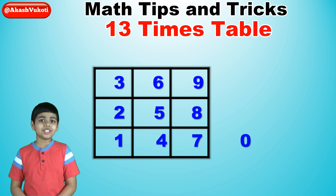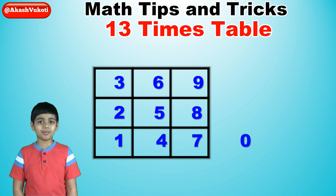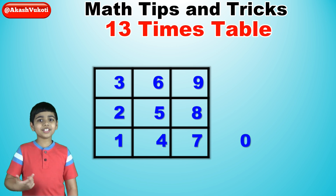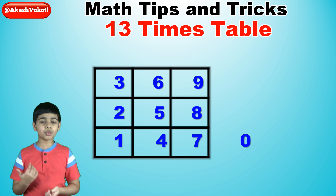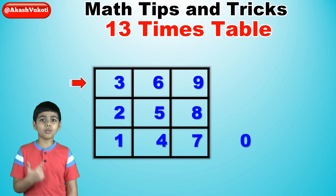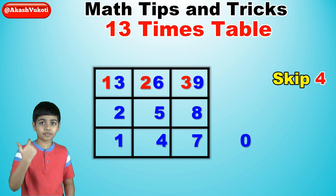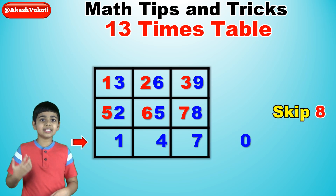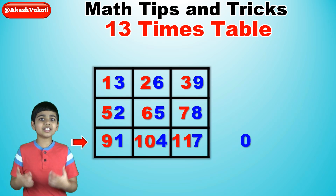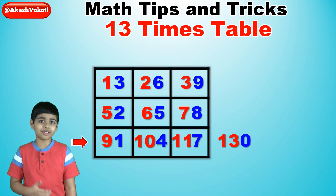For the tens digits, we just write all the numbers from 1 to 13 while skipping 4, 8, and 12. If you notice, that means we are basically skipping multiples of 4. So that will be 1, 2, 3, skip the 4, then 5, 6, 7, skip the 8, 9, 10, 11, then skip the 12 and put a 13 next to the zero outside of the box.